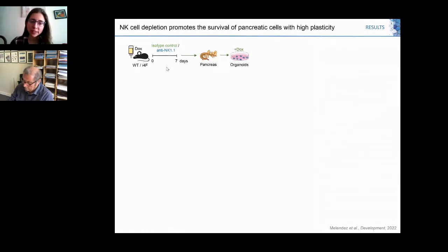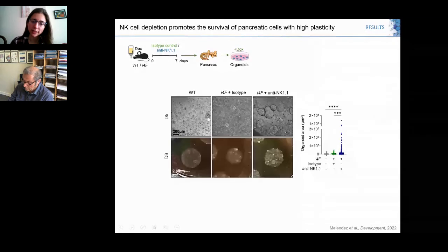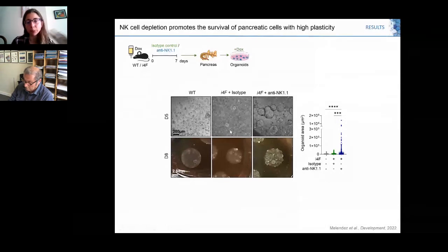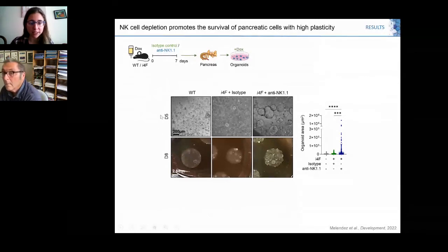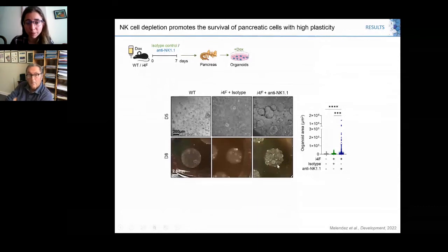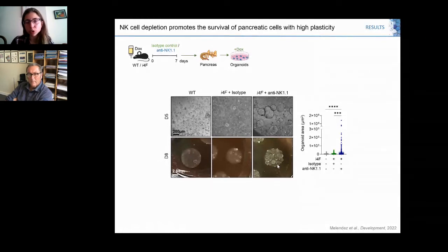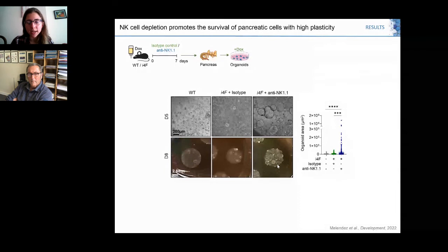We observed that in cells obtained from pancreas in the absence of NK cells, the organoids were much bigger than those from animals that underwent reprogramming in the presence of NKs. The difference was already observed at day five and even at day eight without needing a microscope. These results suggest cells could be endowed with higher plasticity. We are currently performing engraftment experiments to see whether indeed these cells are more plastic.